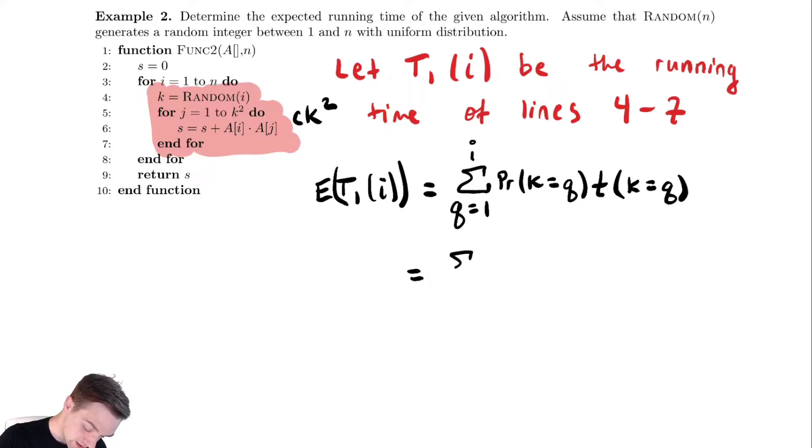This equals the sum from q equals 1 to i. Well let's look at those things. Again, random is a function that returns a value between 1 and its input with uniform probability. So the probability that we are equal to a particular value here, we need to be careful, is 1 over the total possible number of values. So this should be 1 over i, not 1 over n, because we are only inputting i into the function. And the runtime for a particular value is going to be cq².